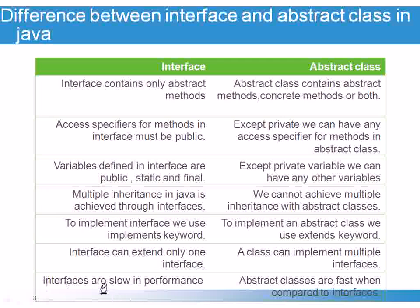And the last point: Interfaces are slow in performance, and abstract classes are very fast when compared to interfaces. Why? Because when we try to add a new functionality to the interface, we have to implement that method wherever we are adding that functionality. Suppose if we have 10 classes that implement these interfaces, then we need to add all the implementations there.